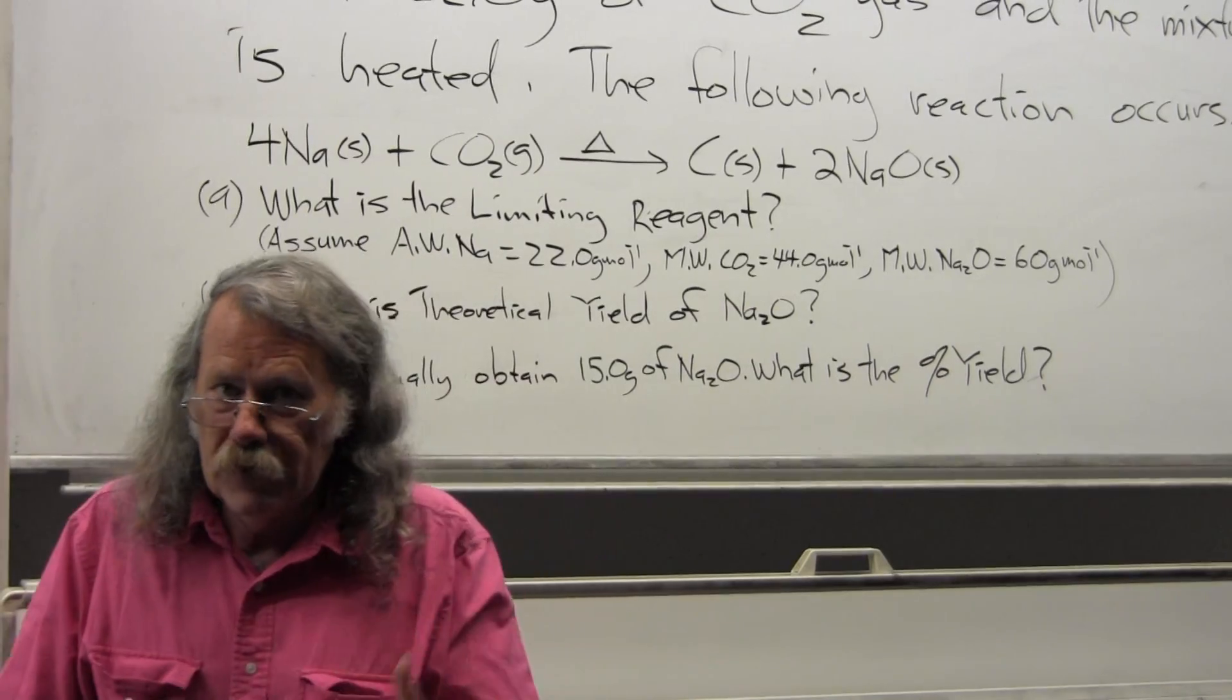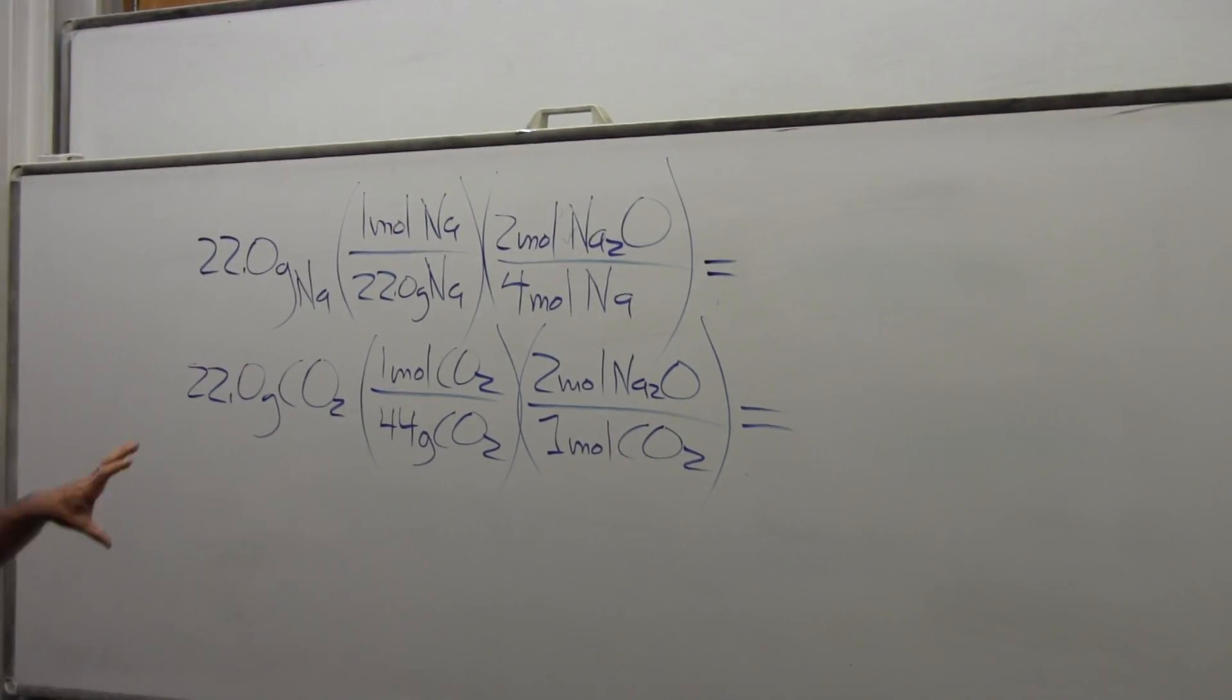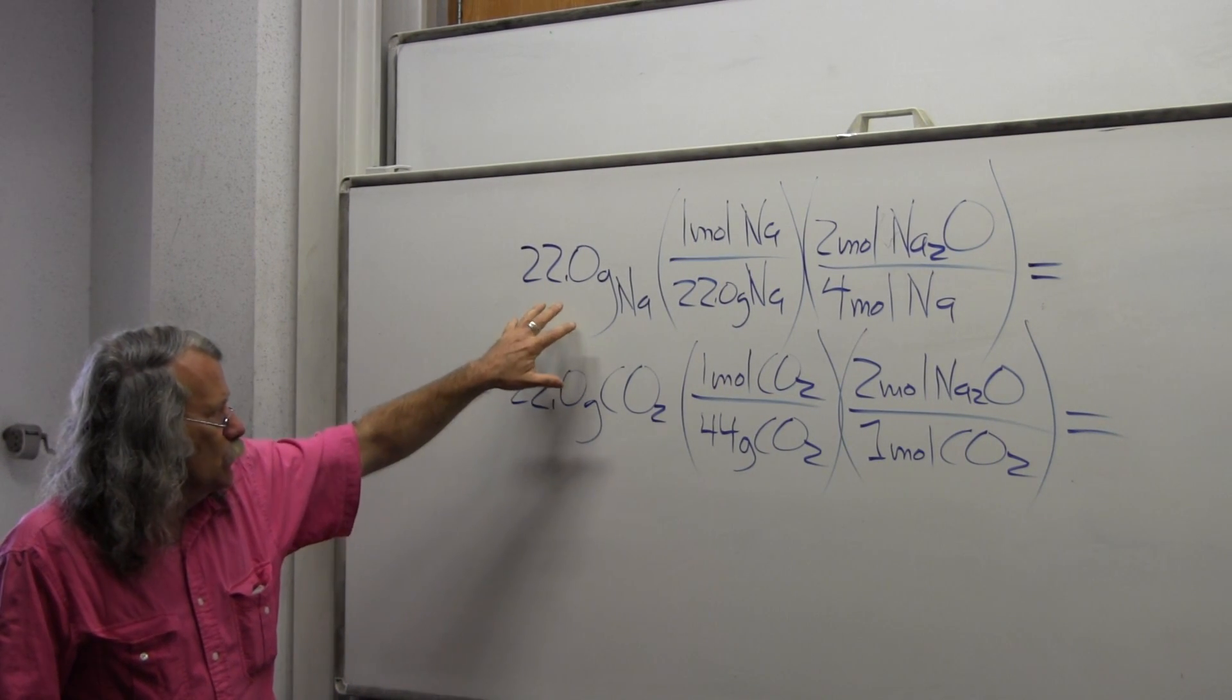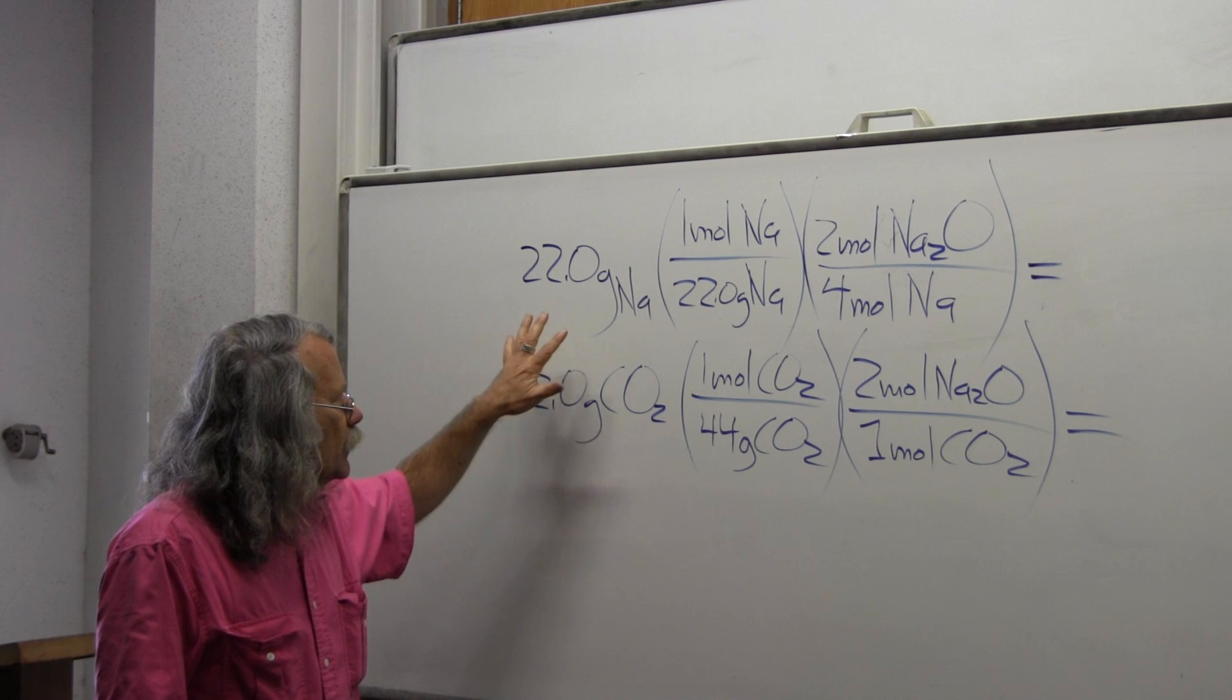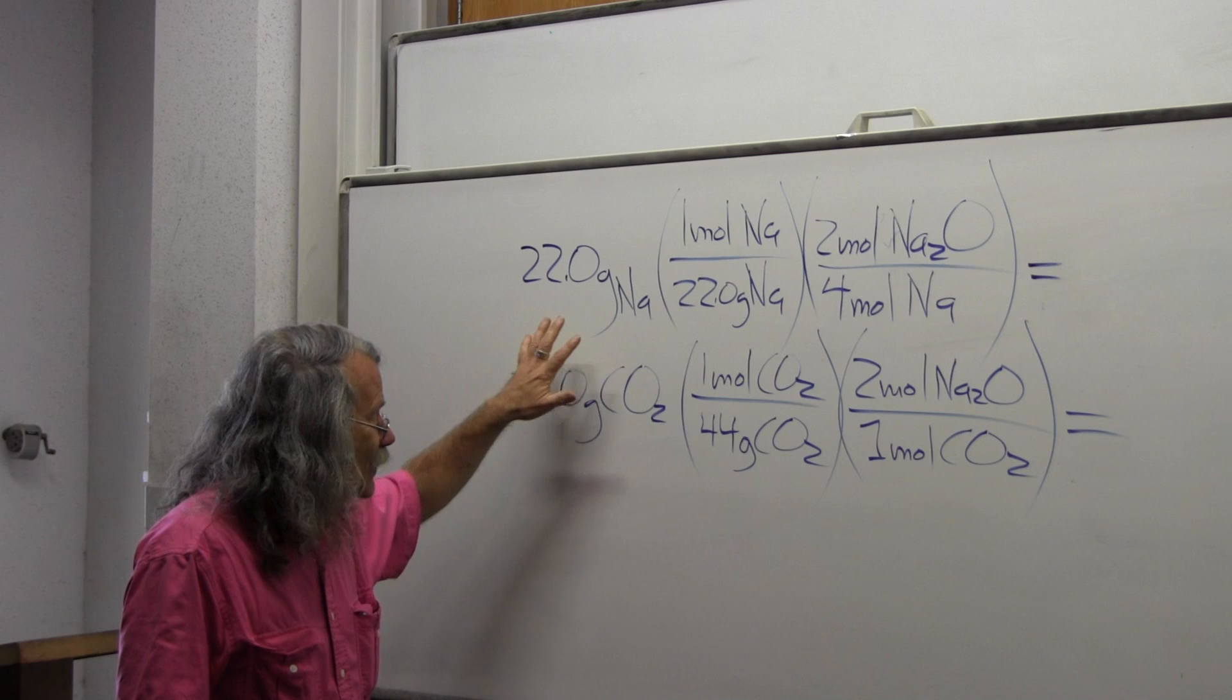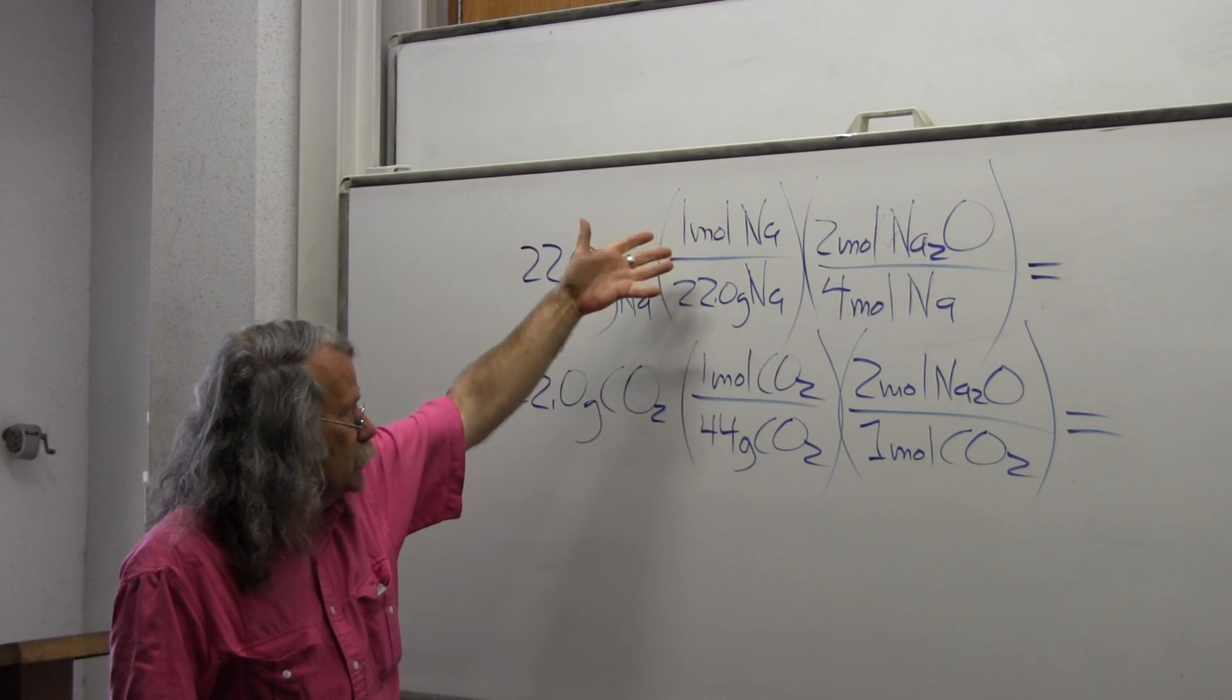Now let's solve the problem. I've already written part of the setup here. The key is we're going to start with the given information, the 22 grams of sodium and the 22 grams of carbon dioxide. We'll start with the 22 grams of sodium first on the left hand side. In my dimensional analysis, I'm going to go from grams of sodium to moles of sodium, with moles of sodium in the numerator.